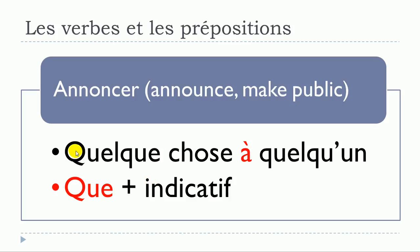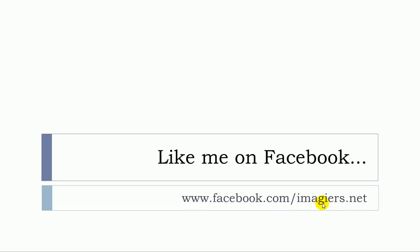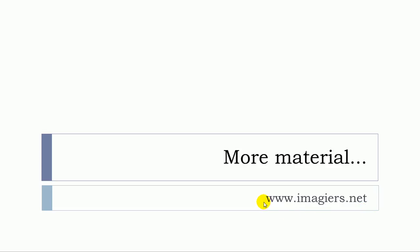Next is annoncer. Annoncer quelque chose à quelqu'un. Then annoncer que plus indicatif — same thing here, even with que, you don't use the subjonctif, just the indicative form. That's it for this lesson! If you want more videos, visit youtube.com/imagier. Don't forget to click like, and more material can be found at the address shown. Have a great day, bye bye!